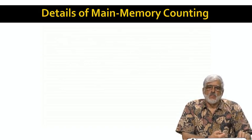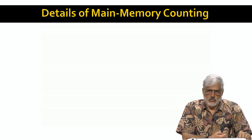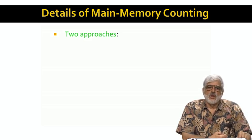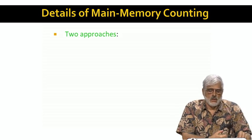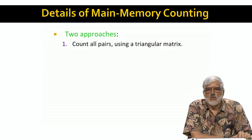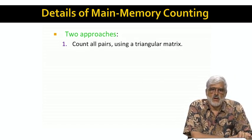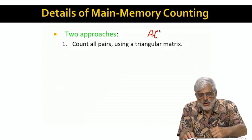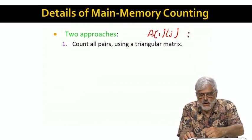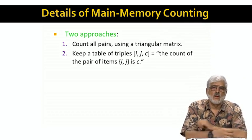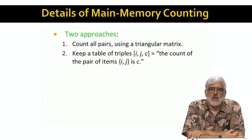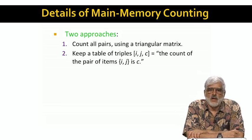Before we proceed, I need to talk in a little more detail about how you organize main memory to do the counting of pairs. There are actually two approaches, and which is better depends on whether it is likely or unlikely that two given items ever appear together in a basket. One approach is to maintain a triangular matrix. I'll talk about this on the next slide, but the idea is to maintain a two-dimensional array where A of i and j is only there if i is strictly less than j. The second approach is to keep records with three components, i, j, and c, meaning that the count for the set of items i and j is currently c. You organize this collection of records by indexing on i and j. So given a pair i, j, you can quickly find its record and increment its count, or just read its count if that's what you want.